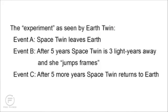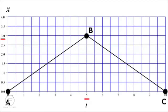All we need to do is make a space-time diagram showing the three frames, plot key events as seen by Earth twin, and read off those events as perceived by space twin. Taking velocity to be three-fifths the speed of light, the dilation factor beta is five-fourths, telling us that five years for Earth twin corresponds to four years for space twin. Event A: the twins are born and space twin leaves Earth. Event B: after five years, space twin is three light years away and jumps from the outgoing red frame to the incoming green frame to turn around. Event C: after five more years, space twin returns to Earth.